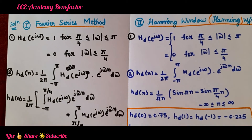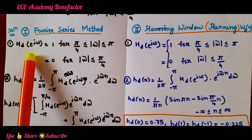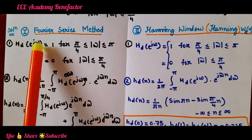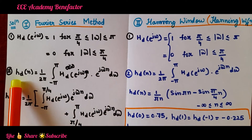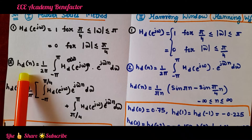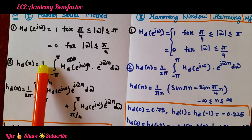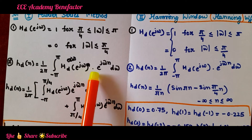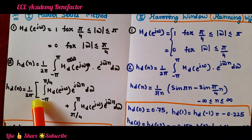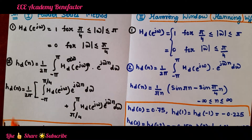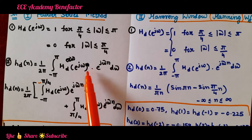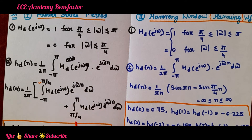Let us first see the Fourier series method. The first step is to write the desired frequency response H_d(e^jω) as given in the question. The second step is to compute h_d(n), the desired impulse response or filter coefficients, given by the formula (1/2π) ∫_{-π}^{π} H_d(e^jω) e^{jωn} dω. The integral is split into two parts: from -π to -π/4 and from π/4 to π.